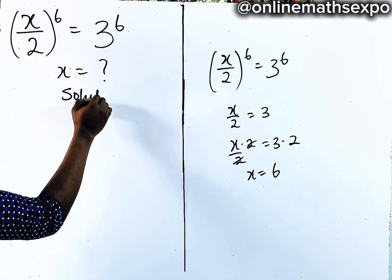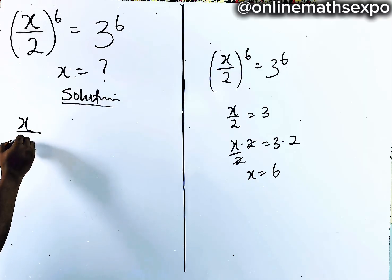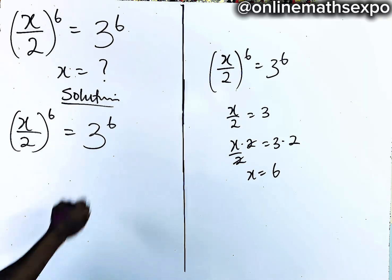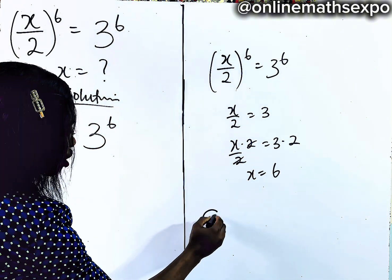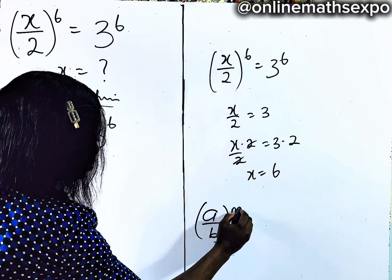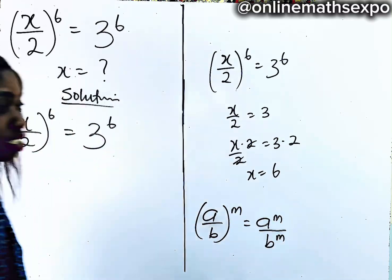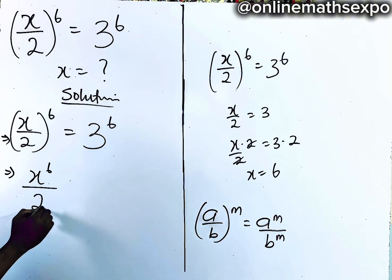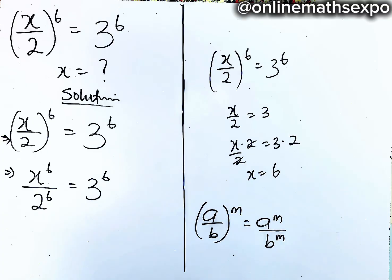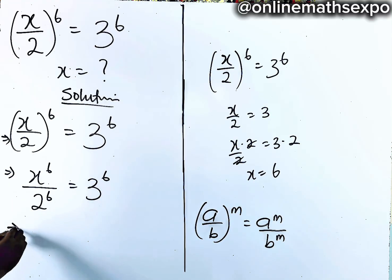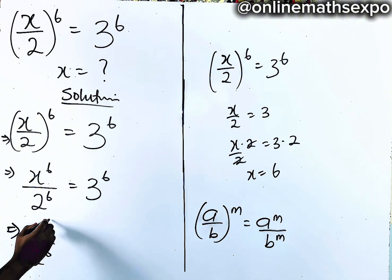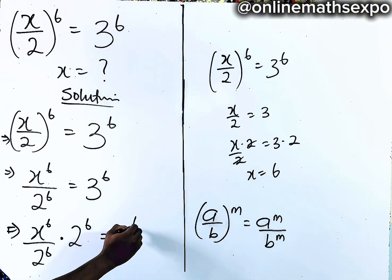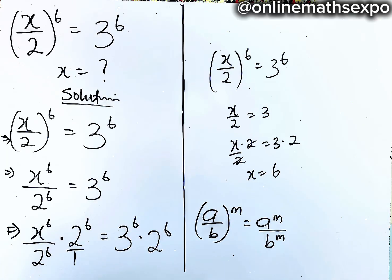Let's begin with our solution. We have x divided by 2, to the power of 6, is equal to 3 to the power of 6. Now, remember that for every (a/b) raised to the power of m, it's always a to the power of m divided by b to the power of m. So applying this here, we now have x to the power of 6 divided by 2 to the power of 6 is equal to 3 to the power of 6.